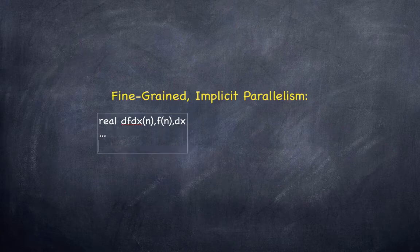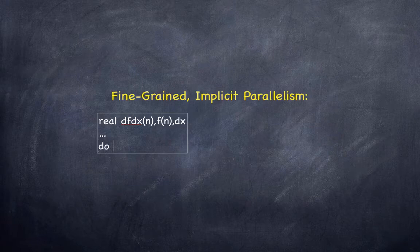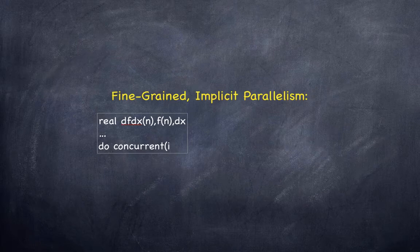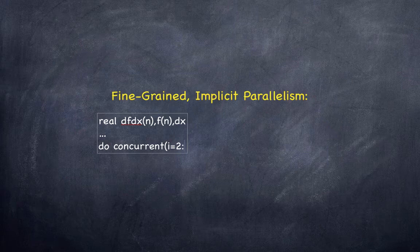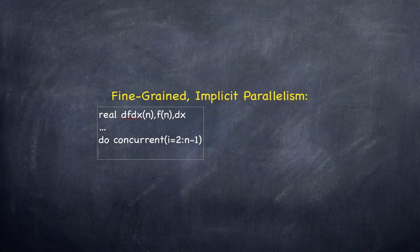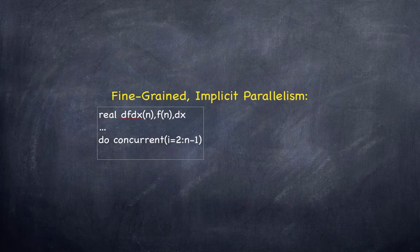We'll imagine that somewhere in between the declaration and the do concurrent we initialize the data. And when we write do concurrent it at first looks like a serial looping construct like a regular do loop, but in fact what we're doing is communicating to the compiler that there are no data dependencies between the different iterations through this do concurrent construct.